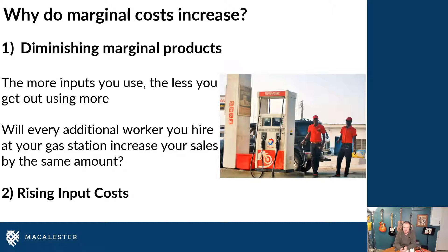The first one is due to diminishing marginal products. Let's think about a gas station and what are the types of variable costs that you can change as you want to sell more and more. You could hire more people to work at the gas station — in some states and countries, you have people who are there to actually fill up cars. One thing you could do if you want to sell more gasoline is hire more and more people. However, if you only have a certain number of gasoline pumps, eventually you'll have some people filling up cars but other employees who are just standing around. As you hire the second employee, he is less productive than the first employee who's able to run around and fill up the pump for everybody.